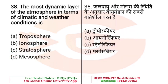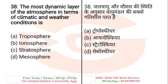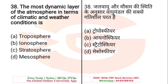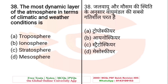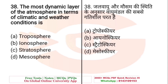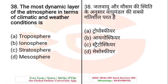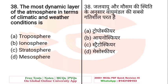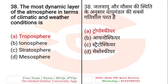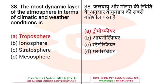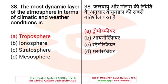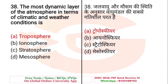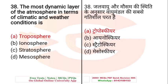Question: The most dynamic layer of the atmosphere in terms of climatic and weather conditions is — A. Troposphere. The right answer is Troposphere — it is called the most dynamic layer of the atmosphere in terms of climatic and weather conditions.